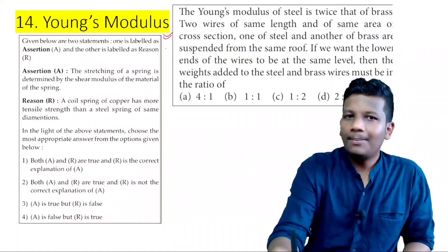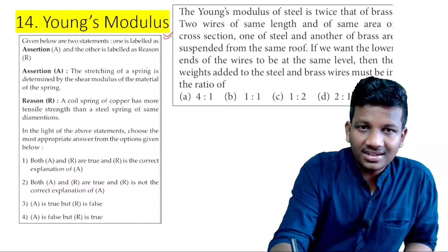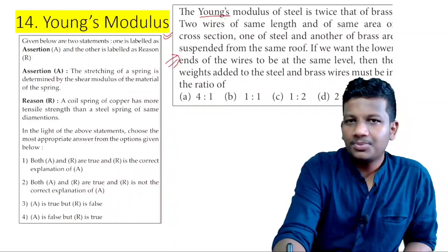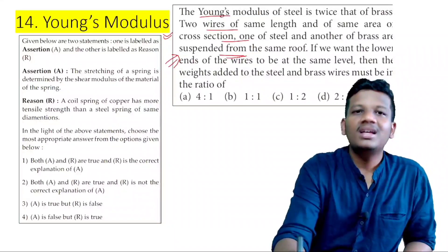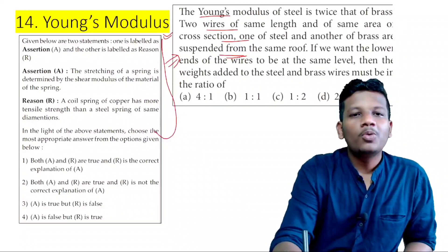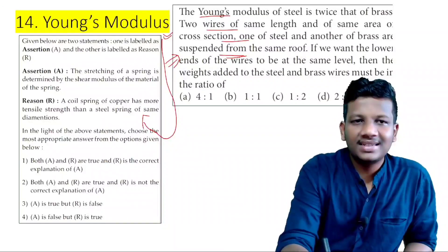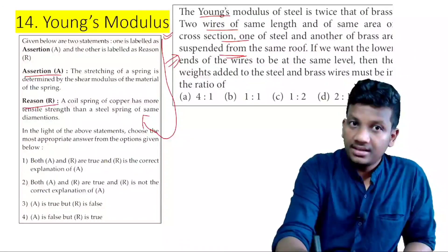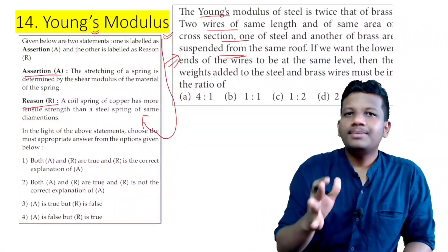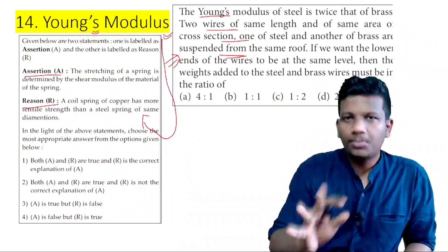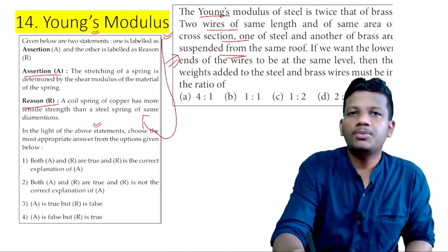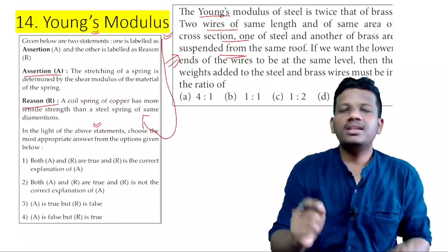The 14th favourite question is the Thomson model of atoms. If you compare the number of atoms, they have to do a statement based on assertion and reasoning. If you know the Thomson model of atoms, you can answer all these assertion and reasoning questions.